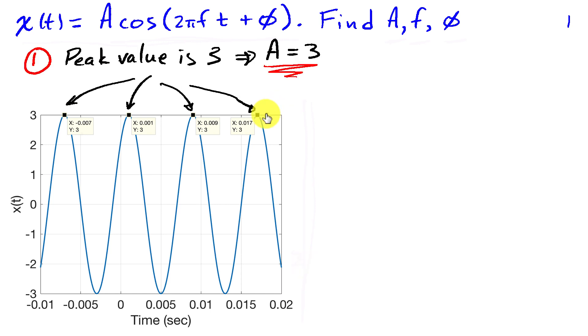So as we've identified, the peak value is 3, and that corresponds to the amplitude of the sinusoid. So we know that A is going to be equal to 3.